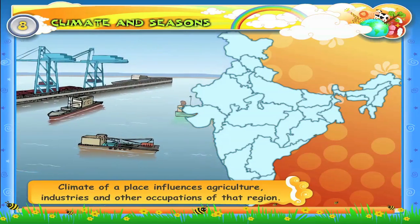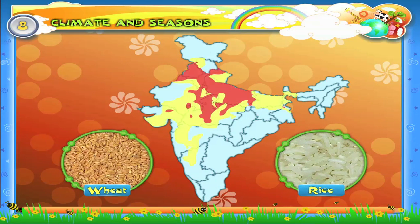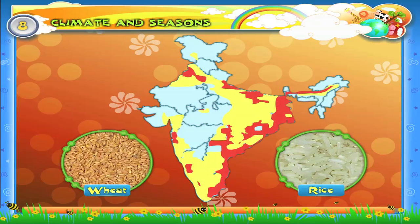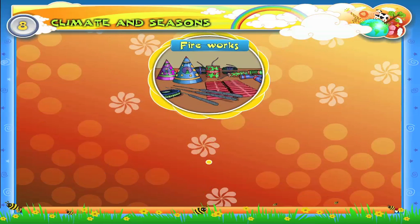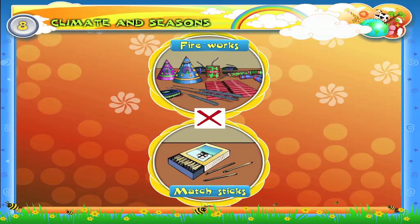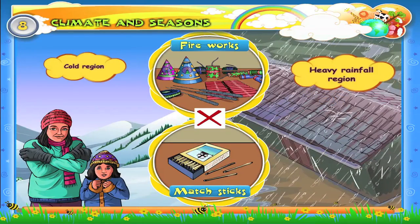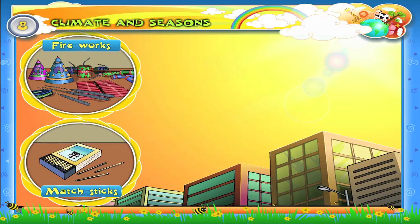In some parts of India, plenty of wheat is grown. In some regions of India, rice is grown in large amounts. This is mainly because of the difference in climate. Fireworks and matchsticks cannot be manufactured in cold regions or heavy rainfall regions because they require plenty of sunlight.